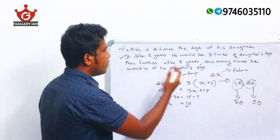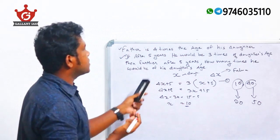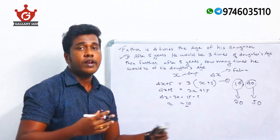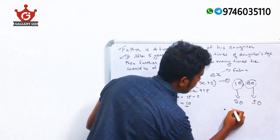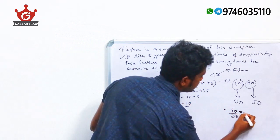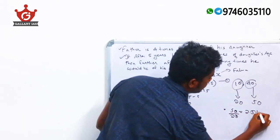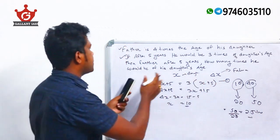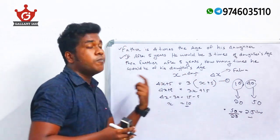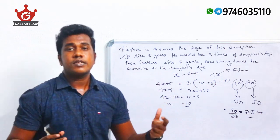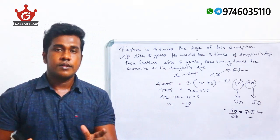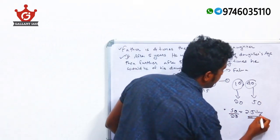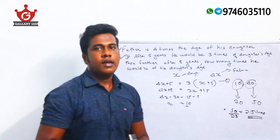We need to find how many times the father's age is compared to the daughter's age. That is 50 ÷ 20 = 5/2 = 2.5. So the father's age is 2.5 times that of his daughter's age after 10 years. Our answer is 2.5 times.